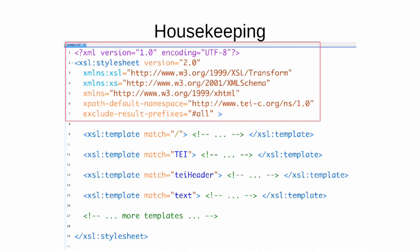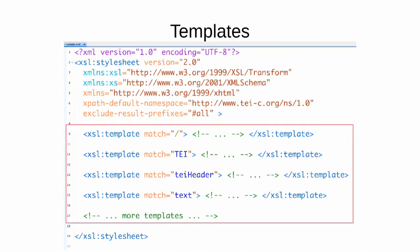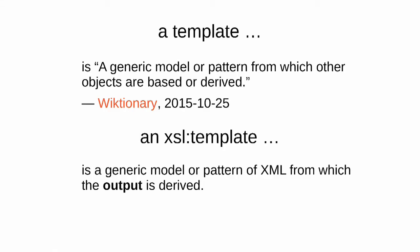A template, according to Wiktionary, is a generic model or pattern from which other objects are based or derived. That's how the xsl:template element gets its name. An xsl:template is also a generic model or pattern — in this case of XML — from which the output is derived.